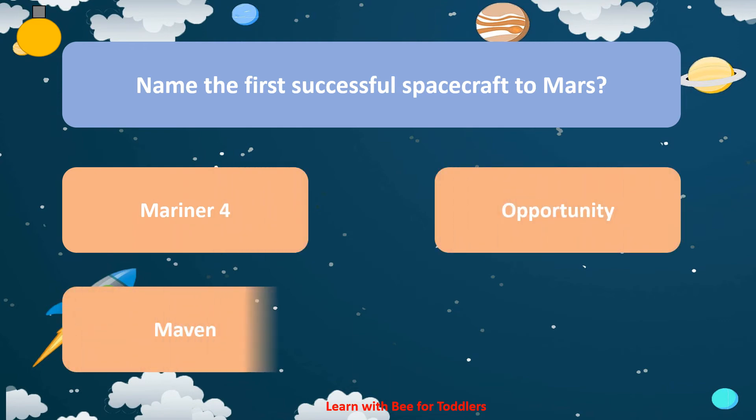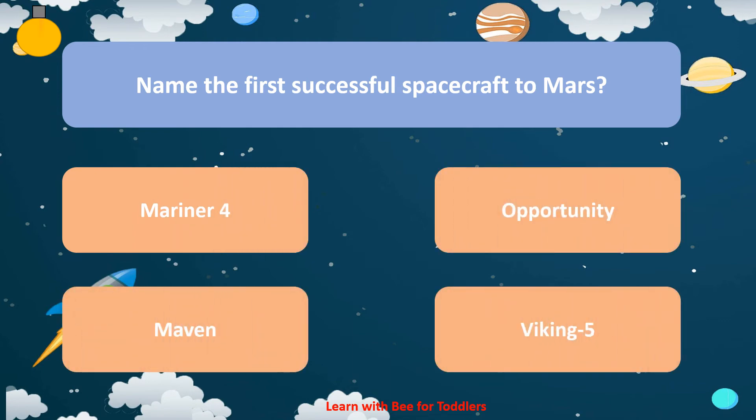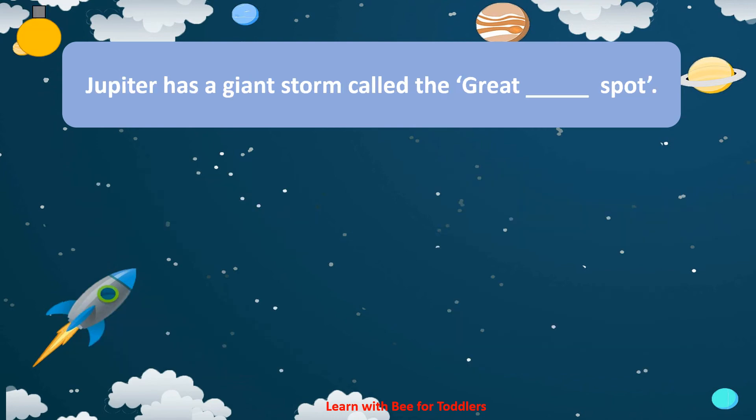Opportunity. Maven. Viking 5. Mariner 4. Jupiter has a giant storm called the Great Spot. Blue.